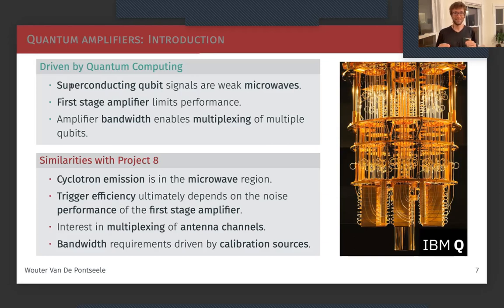And here there are a lot of similarities with what Project 8 is aiming to achieve. Project 8 looks at cyclotron emission which is also in this microwave region, and the trigger efficiency ultimately depends on the noise performance of the first stage amplifier. We are also interested in the bandwidth because we might want to multiplex different antenna channels, and some calibration sources might require a large bandwidth.